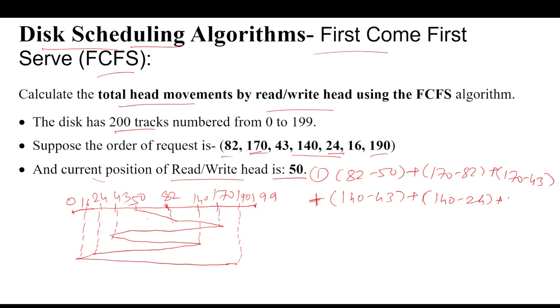From 140 to 24, that means 140 minus 24. Then 24 to 16, that means 24 minus 16. Last we visited from 16 to 190, so that is 190 minus 16. The answer could be near about 642. So total head movements by read/write head are 642 movements.